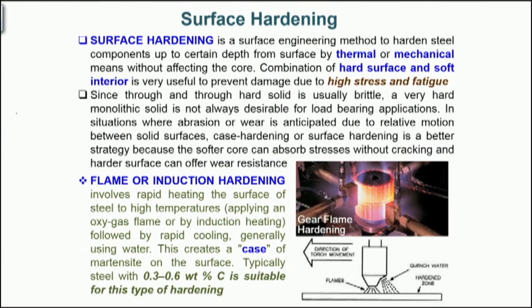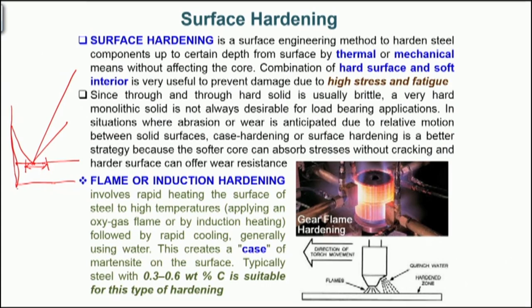In steel, if we look at the solid state part of the iron-carbon diagram, specifically the eutectoid portion, the composition range we are concerned with for this surface hardening approach is somewhere around 0.3 to 0.8 weight percent carbon. We are talking primarily about plain carbon steel, though this is certainly applicable to alloy steel as well. We require typically around 0.4 weight percent carbon and above.